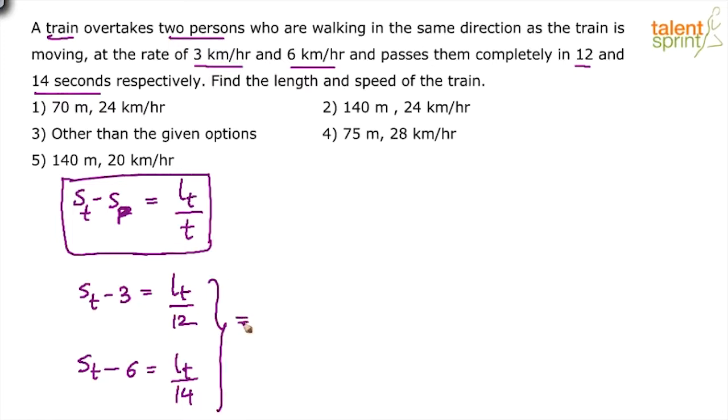So from these two, we can say that 12 into speed of the train minus 3 equals to 14 into speed of the train minus 6. Yes or no? From this LT equals to 12 times ST minus 3. From this LT equals to 14 times ST minus 6.